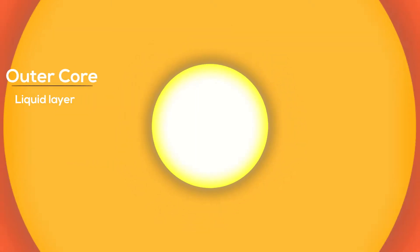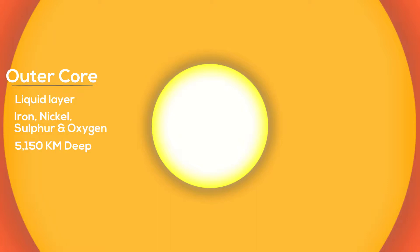The outer core is the liquid layer surrounding the metal ball. It consists of iron, nickel, sulfur, and oxygen. It's 5,150 kilometers deep. The movement of this liquid with the inner ball creates our planet's magnetic field.